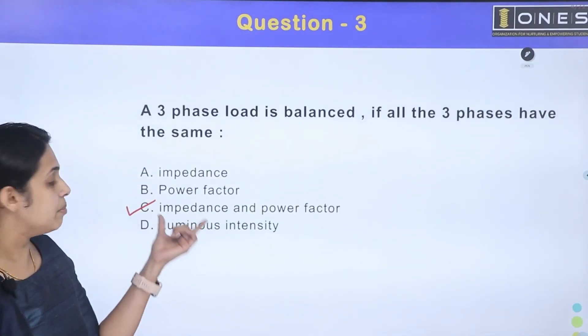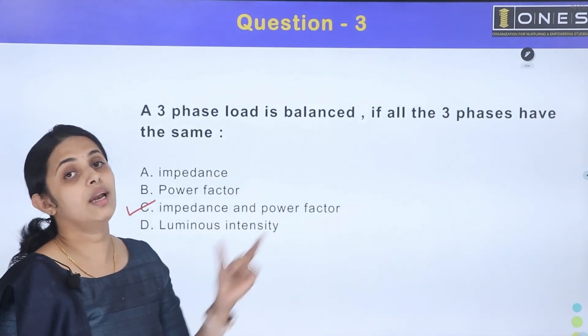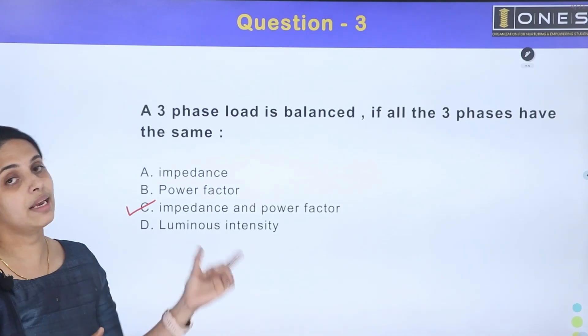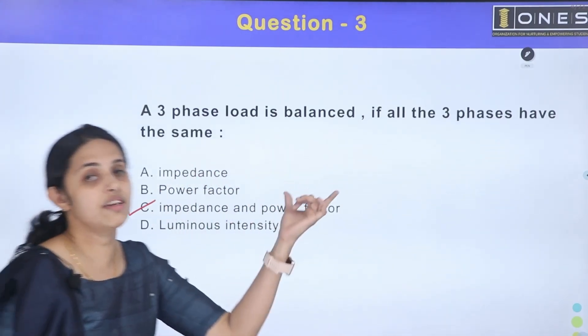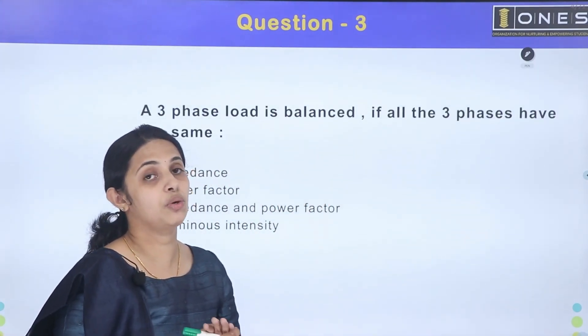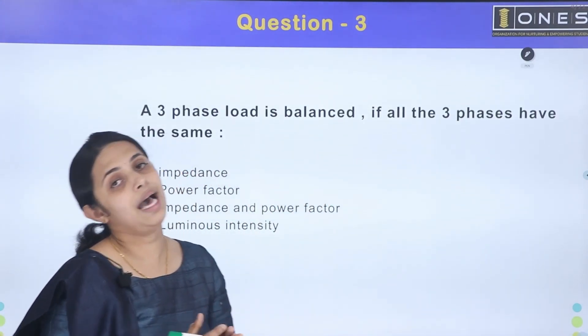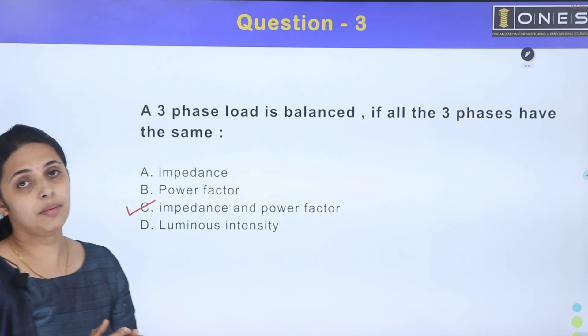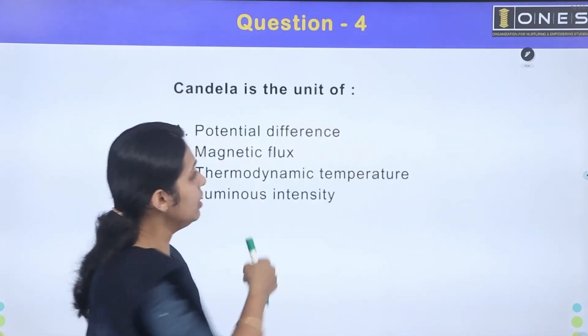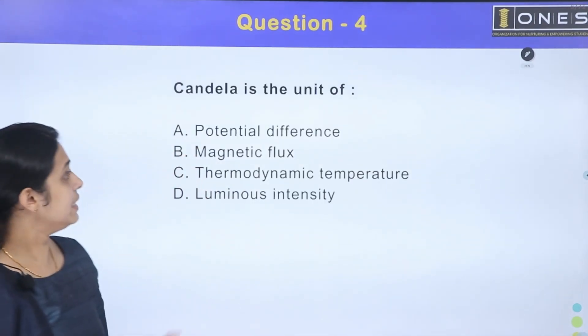That is option C — the impedance and the power factor. Both the load impedance and the power factor must be the same for a balanced 3-phase load.